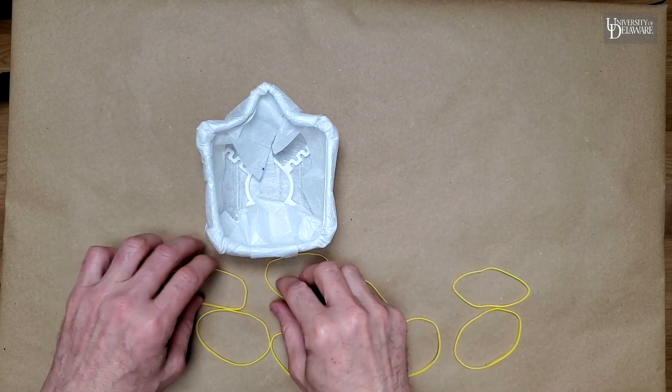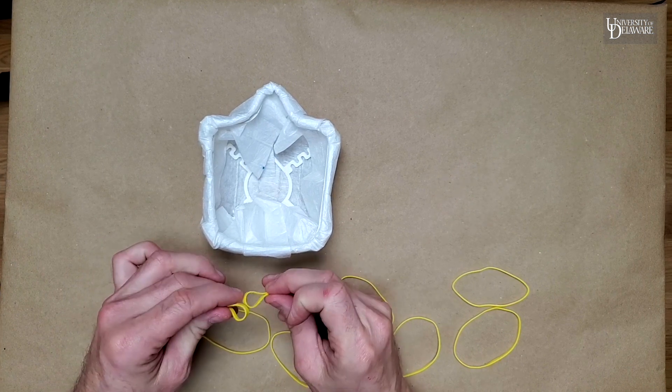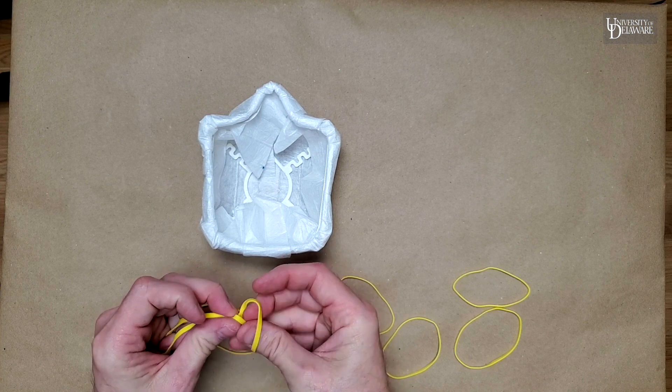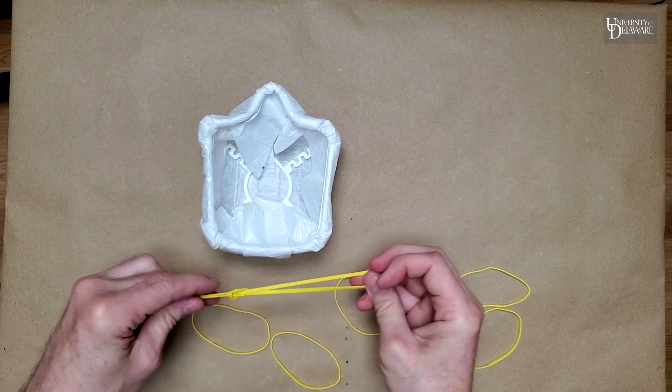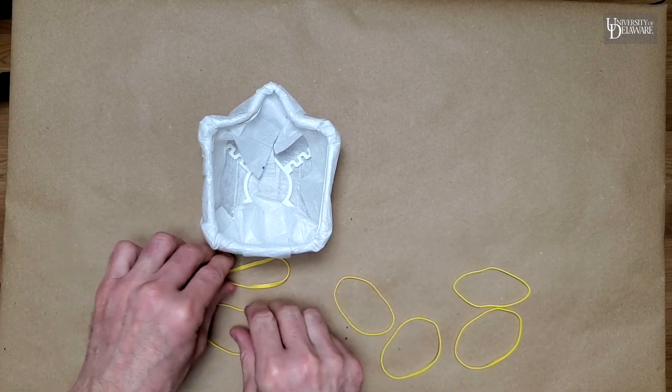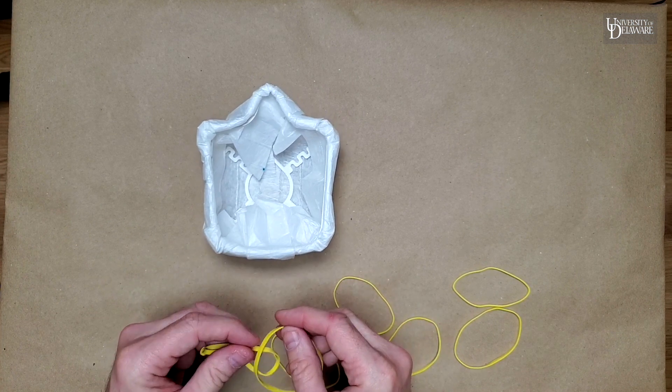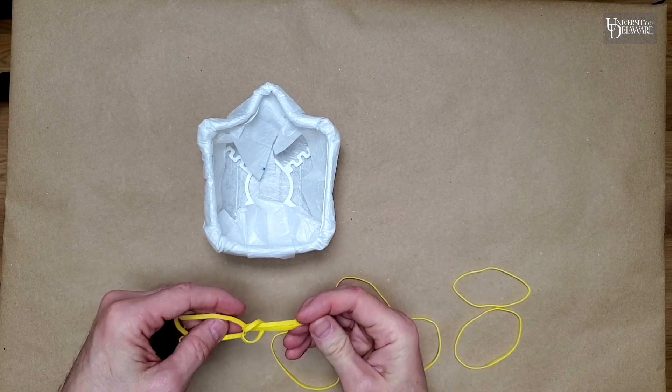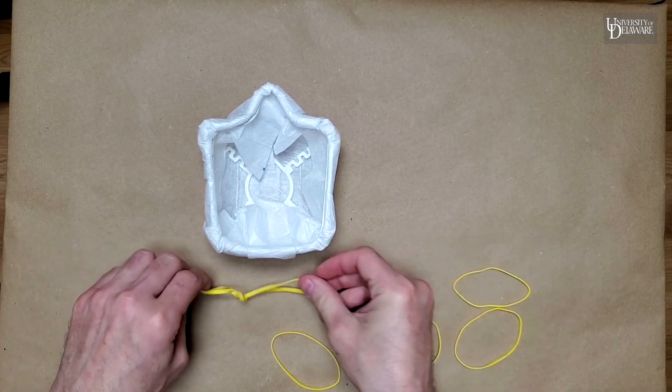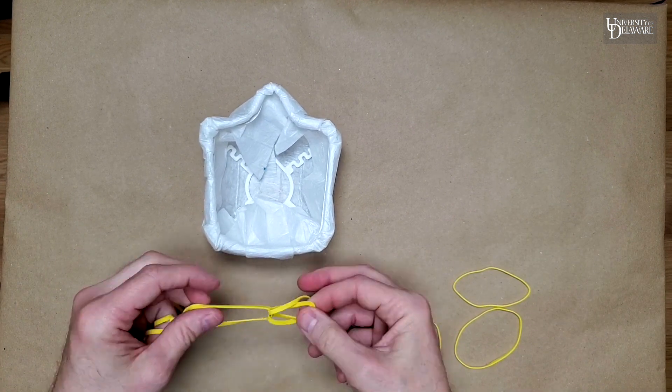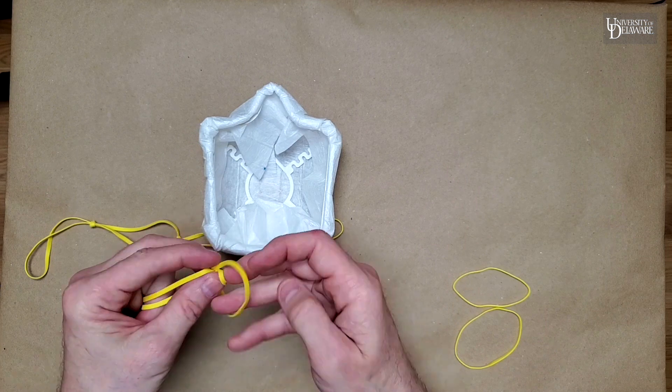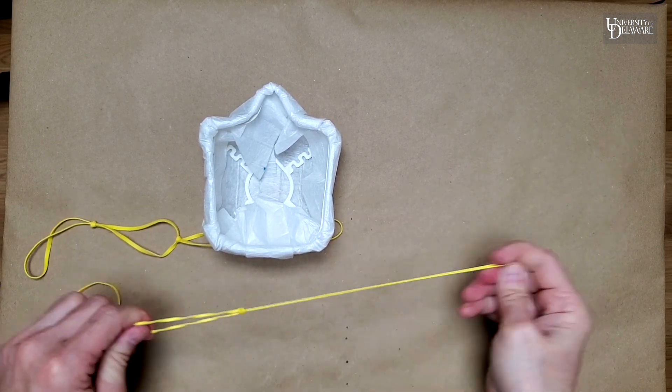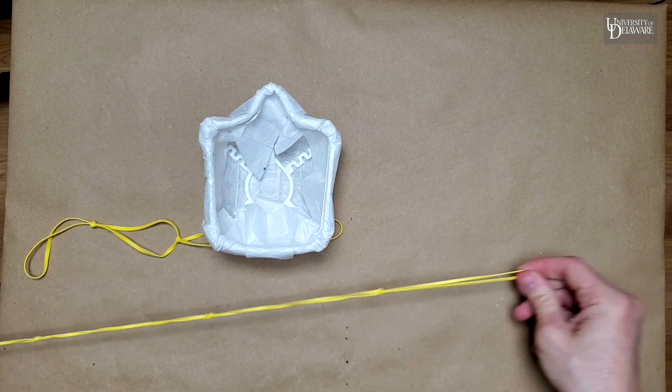Now this is an option that if you don't have the buttonhole elastic, which we have on order, this is a way to do it in a pinch. And all I'm doing is looping four bands together. There we have our two straps.